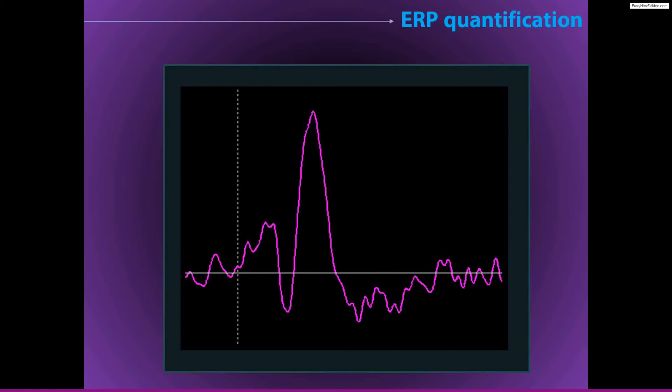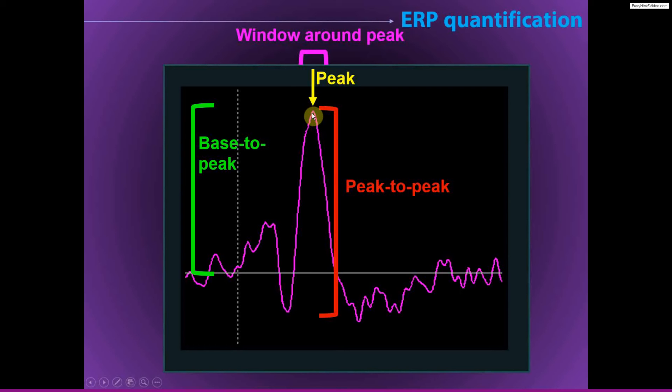Now, if you want to do ERP analyses, you might want to focus on ERP components rather than on the time series vector itself. And here there are a few options for how to quantify the peaks in the ERP. For example, you can quantify the peak-to-peak distance, so the difference between this peak and the subsequent peak. Or you can measure the base-to-peak distance, which is just the microvolt value here, assuming that the baseline period is normalized to zero. And when taking peaks, you can choose either to take the peak point or a window around the peak.